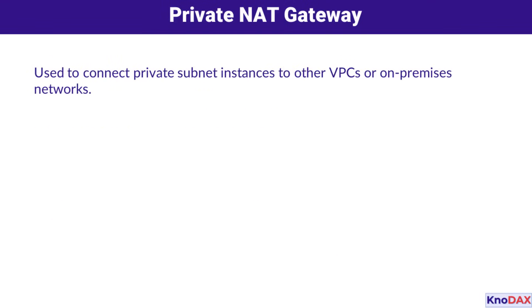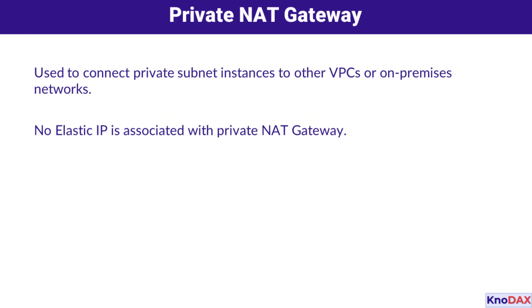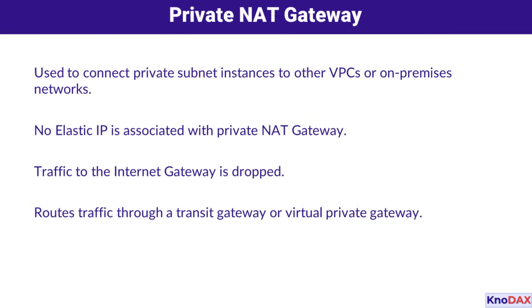Now let's talk about the private NAT gateway. Unlike its public counterpart, this type isn't meant for Internet access. Instead, it's designed for connecting private subnet instances to other VPCs or on-premises networks. Since there's no Elastic IP involved, all Internet-bound traffic is dropped. Instead, it routes through a transit gateway or a virtual private gateway for secure and efficient connectivity.